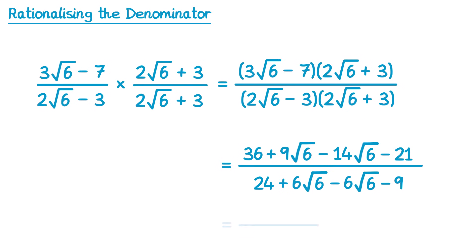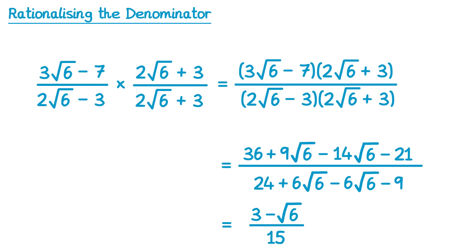So there's quite a bit of simplifying we can do. On the top: 36 minus 21 gives 15, and 9 root 6 take away 14 root 6 — doing 9 take away 14 gives negative 5, so it's negative 5 root 6. On the bottom: 24 subtract 9 gives 15, and 6 root 6 subtract 6 root 6 cancels to give 0. So on the bottom it's just 15, which is a rational number. We can also simplify — 15, 5, and 15 are all in the 5 times table. 15 divided by 5 is 3, negative 5 root 6 divided by 5 is negative 1 root 6, and 15 divided by 5 is 3. So the fully simplified answer to this one is 3 subtract root 6 over 3.